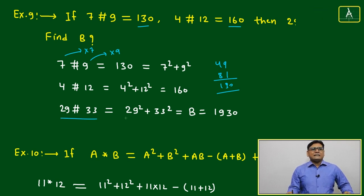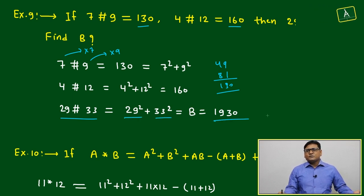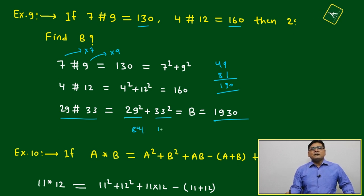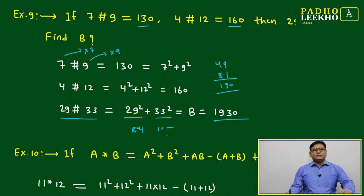29 # 33: 29² + 33² = 1930. This will be 841 and this will be 1089. You will get 1930.